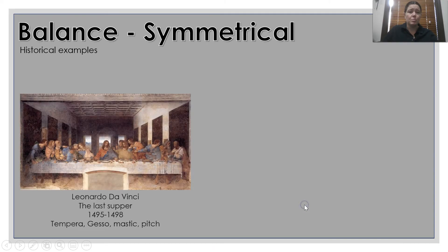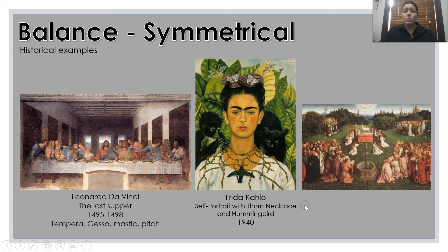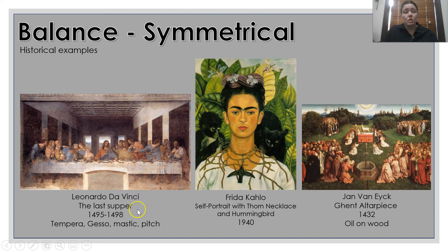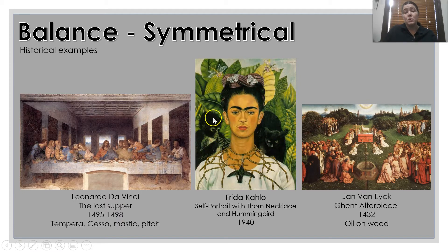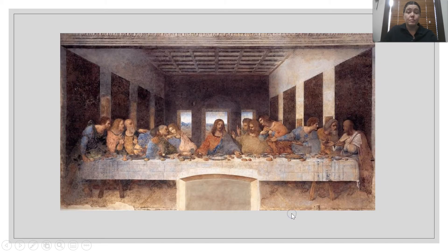Some symmetrical examples of balance. These historical artworks — if you put a line through them you will see that it's balanced on both sides. Da Vinci's Last Supper is a classic example of symmetrical artwork. Carlo's work is also an example of symmetrical work because even though there are different animals on both shoulders, they're balanced by the shape and colour. And Van Eyck's work is quite identical on both sides — they mirror each other.